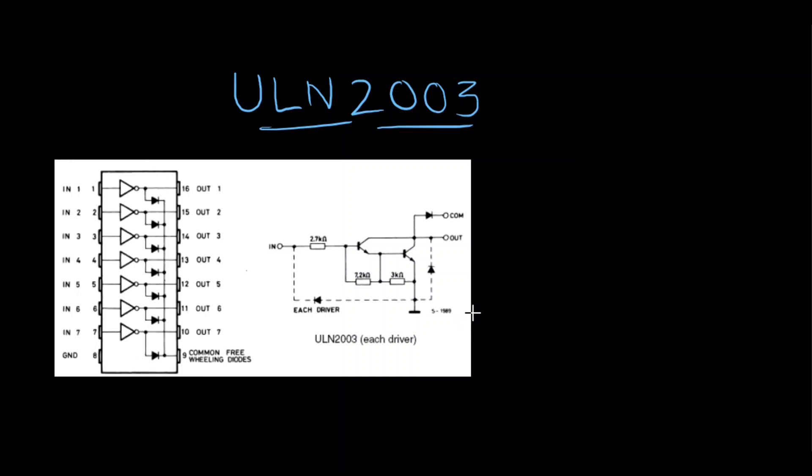The main reason for using ULN2003 is it provides very high current capability. For example, if you take any regular microcontroller, maximum it would support up to 40 milliamps. But each transistor in this ULN2003 can support up to 500 milliamps. That's the speciality of this transistor. Wherever we require high current capability, we're going to use this IC.